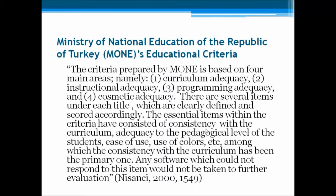MOON's Educational Criteria: In the year 2000, the Ministry of National Education of the Republic of Turkey, otherwise known as MOON, developed a criteria based on the following four areas: 1. Curriculum Adequacy, 2. Instructional Adequacy, 3. Programming Adequacy, 4. Cosmetic Adequacy. These items focus on pedagogy, including consistency with the curriculum and adequacy to the pedagogical level of the students, where consistency with the curriculum has been the primary one. Any software which could not correspond to this item was not recommended to be taken further.